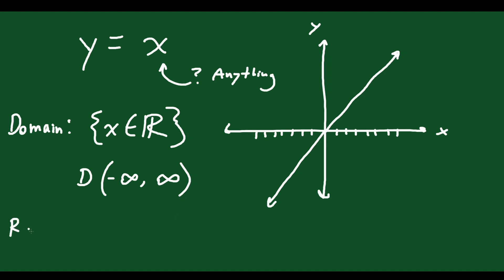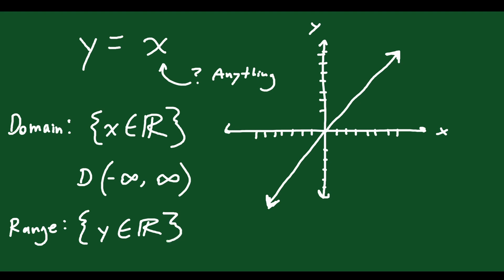Now let's talk about the range. Just like how you can plug anything in for x, because x is equal to y, we can say that y is also equal to anything. Your y values go up forever and ever and down forever and ever. If this graph has a little arrow on the end, that means it's going up and to the right forever, and on the left end it's going down and to the left forever. So the graph never stops. We could say y exists in the set of real numbers, or that your range goes from negative infinity all the way to positive infinity.